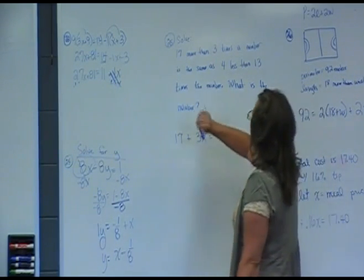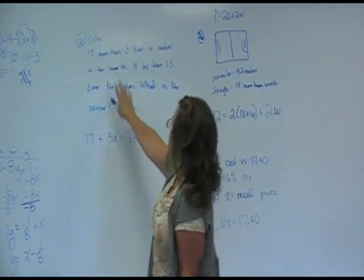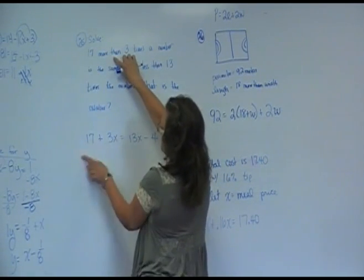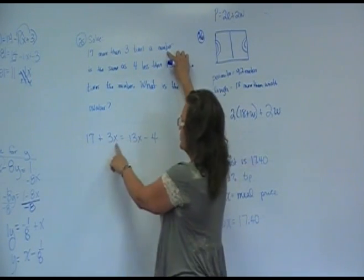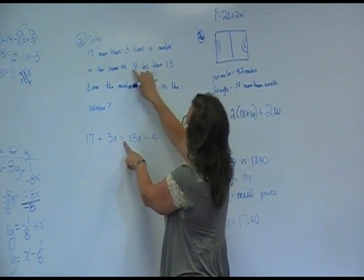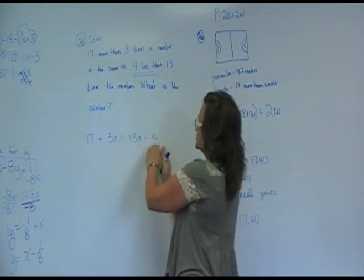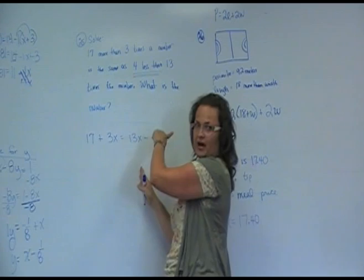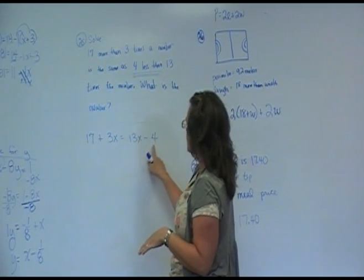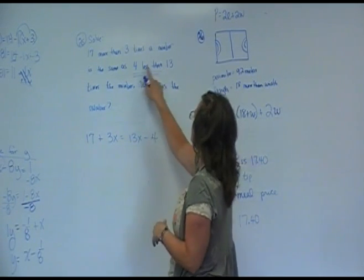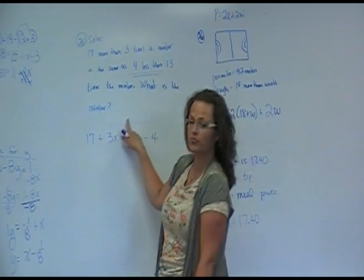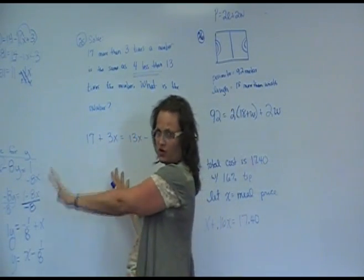Number 25 is taking words and changing it into an algebraic statement. So it says solve this written out problem. 17 more than three times a number. 17 more than means plus. Three times a number means we don't know. It's a variable. A variable x is the same as, that's your equal sign, 4 less than. When it uses that phrase 4 less than, it means 4 is subtracted from something. So it kind of throws it to the back, actually. So watch out for that. If I put 4 minus, don't mess the whole problem up. 4 less than means the 4 is coming from or it's in the back of something. 4 less than 13 times the number. So there's a 13 times the number and then subtracting 4. So what is the number? So we get our equation written and then we follow our solving equation steps.